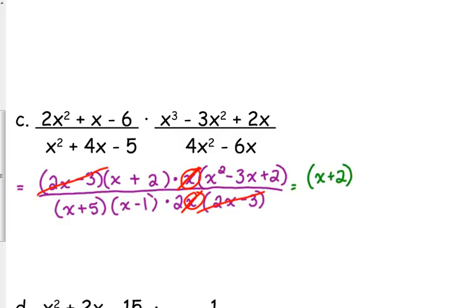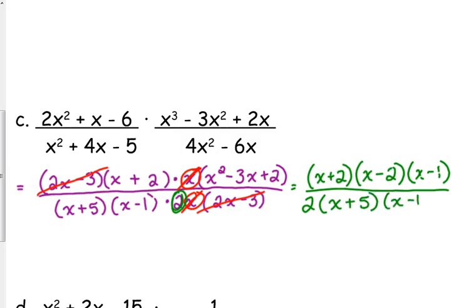I still need to factor that second numerator further into x minus 2 times x minus 1. Don't lose your 2 right there. And so there is one final thing that we can cancel. We can cancel the x minus 1 in the top and in the bottom. So we have x plus 2 times x minus 2 in the numerator over 2 times x plus 5.